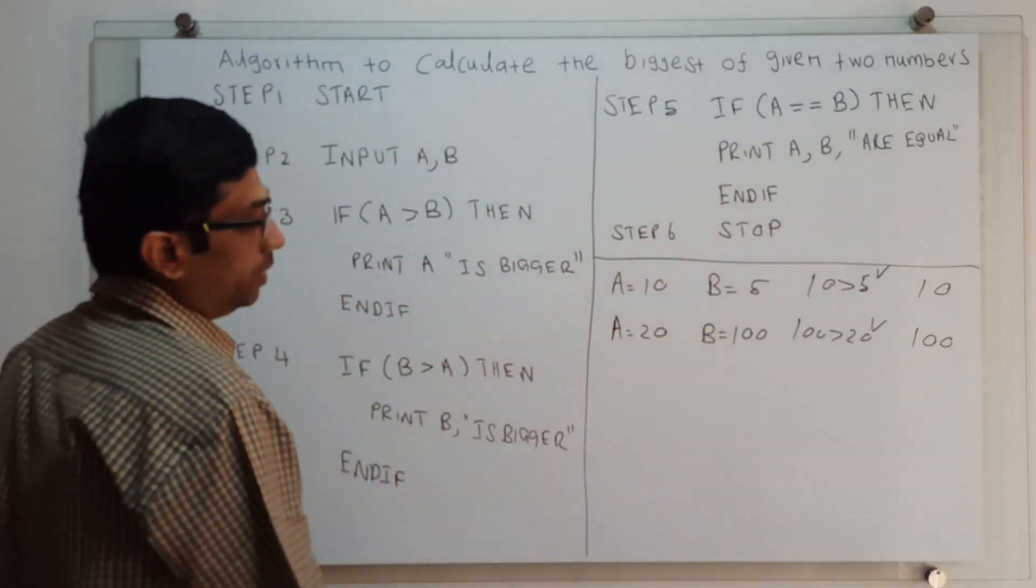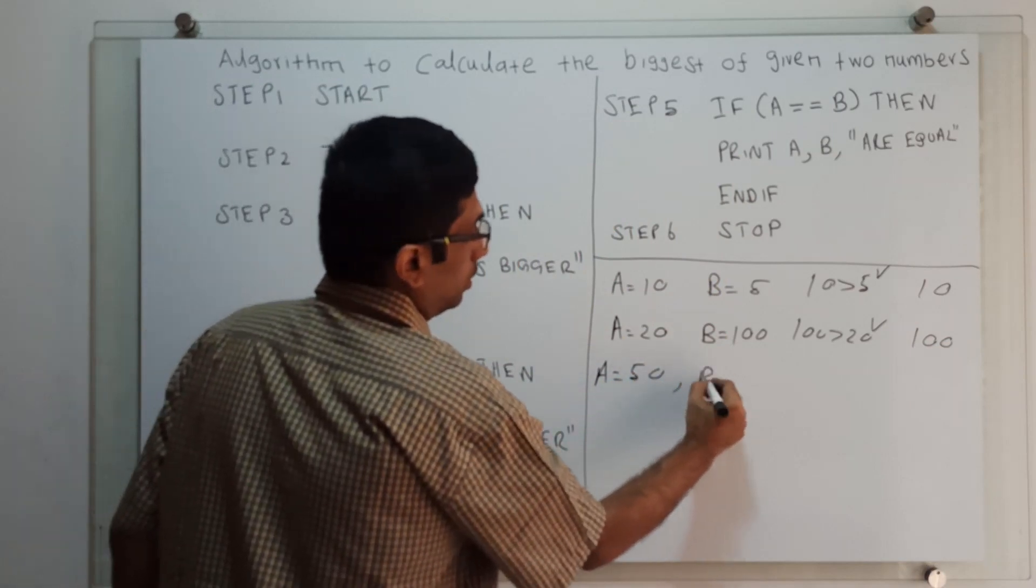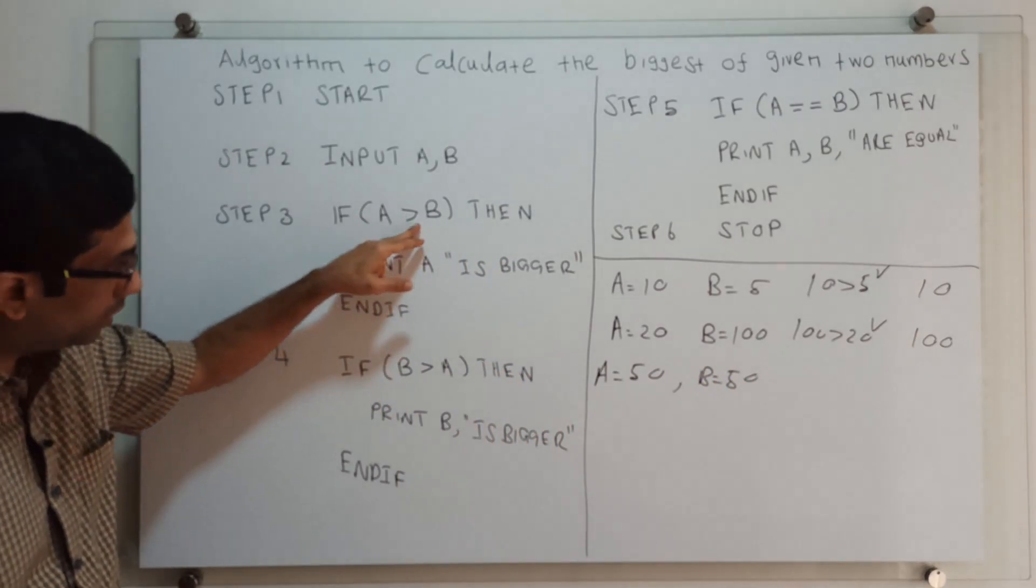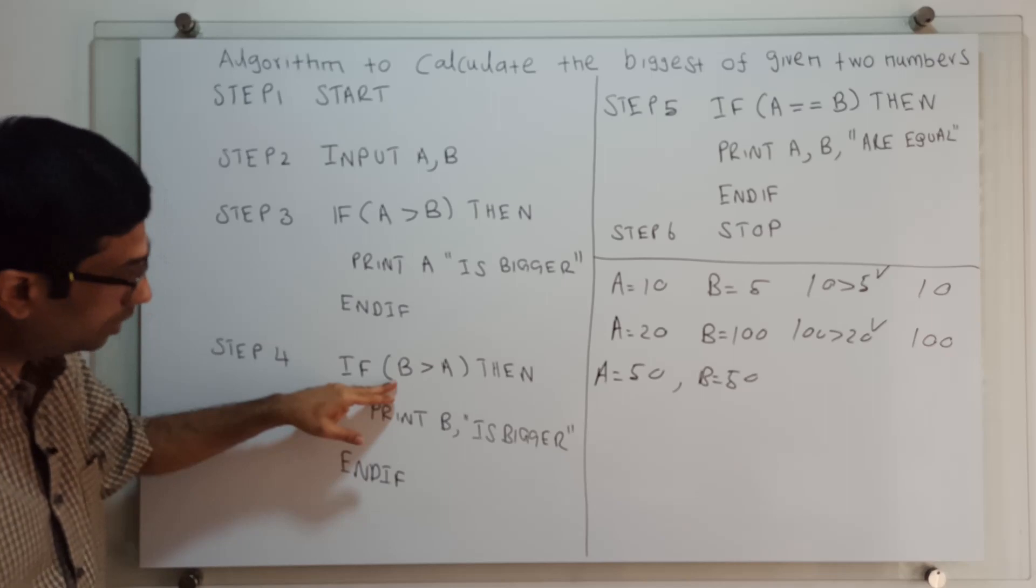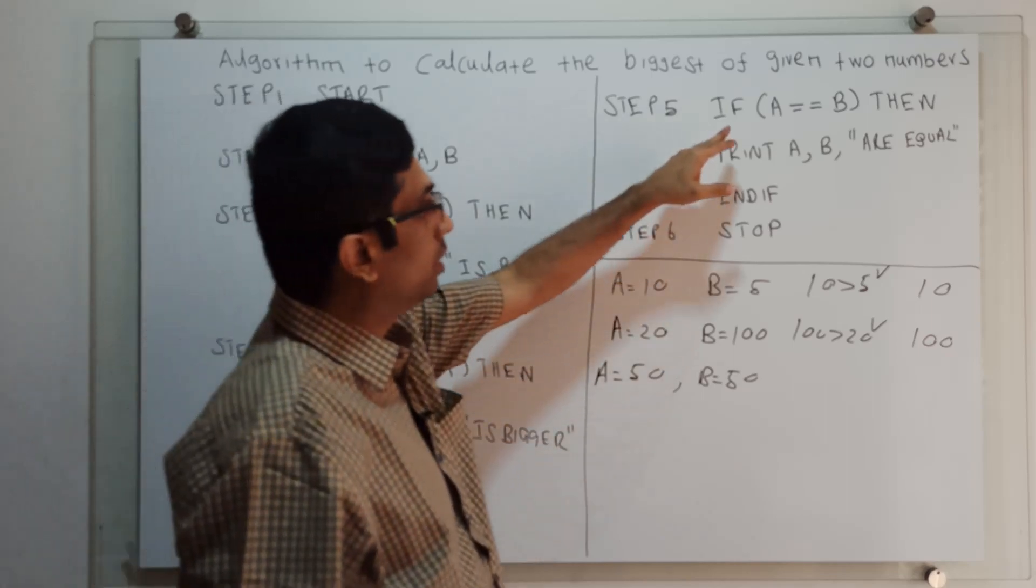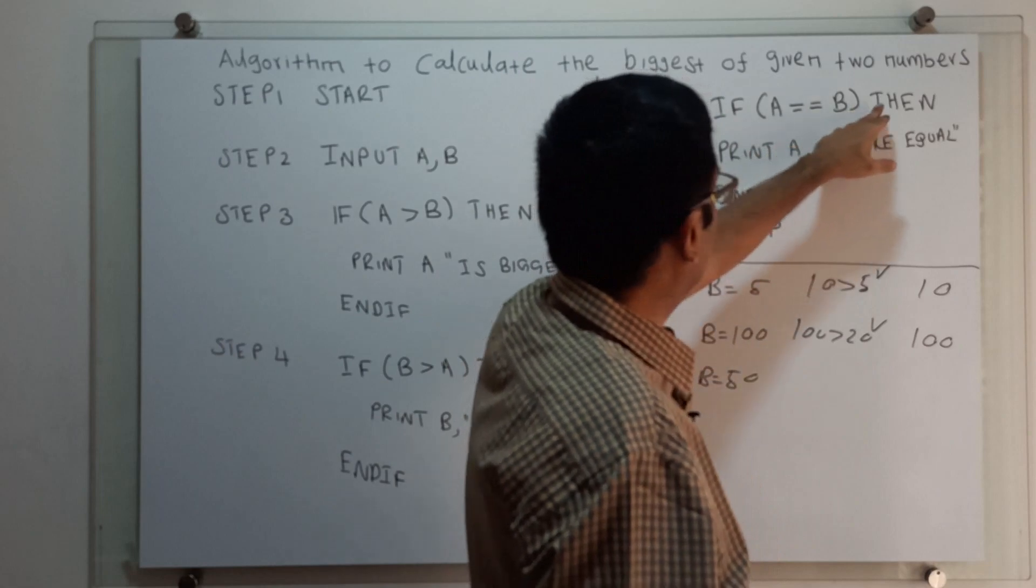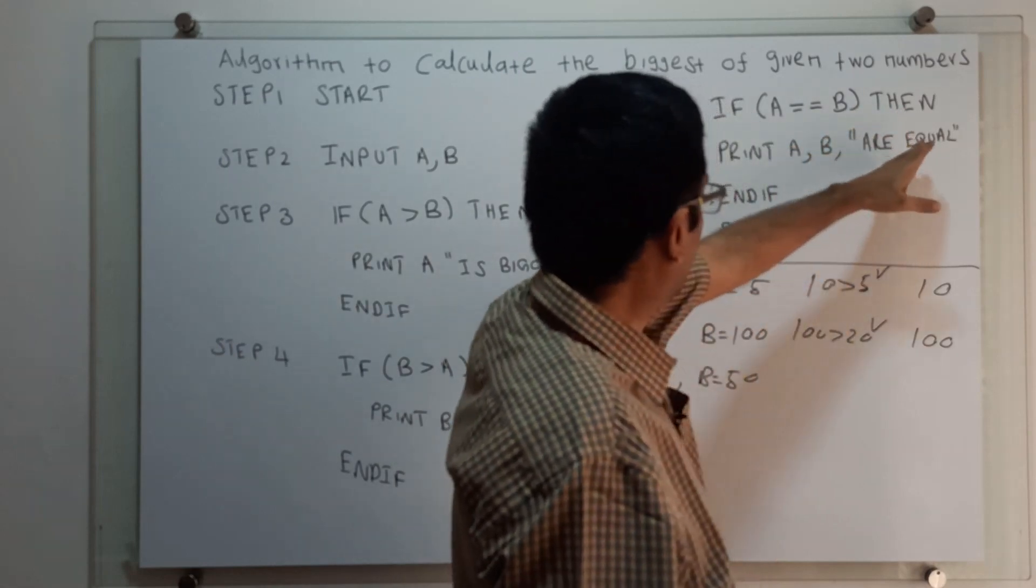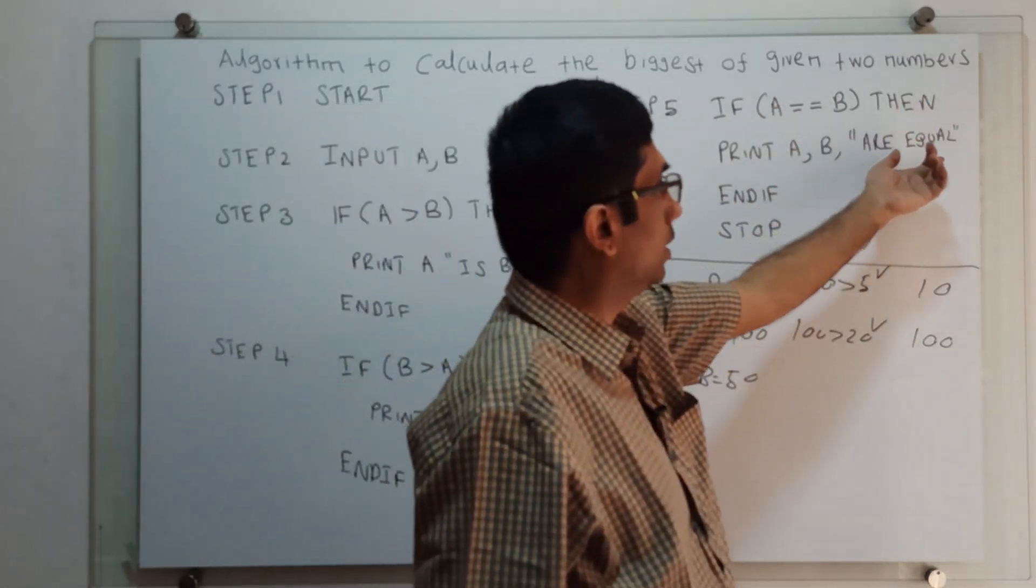For example, I am giving A equal to 50, B equal to 50. We will check the condition. If A greater than B, the condition is false. Again, we will check B greater than A. This condition is also false. It will check if A equal to B. That is, 50 equal to 50. The condition is true. We print A and B are equal.